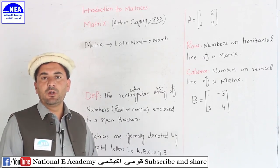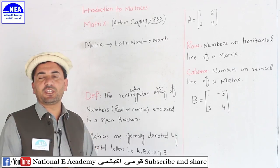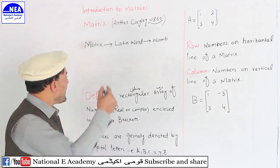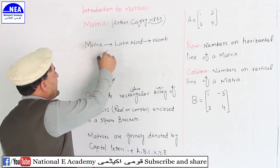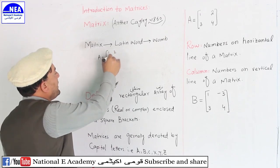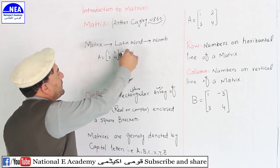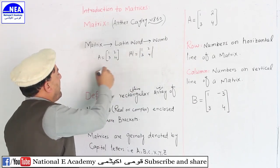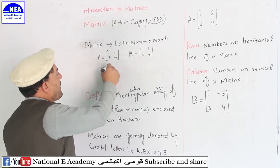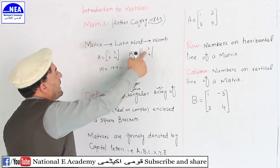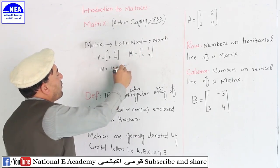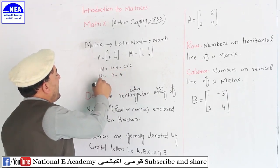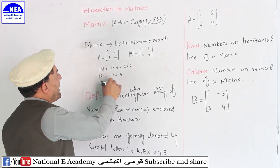When we apply this operation — the determinant — to a matrix of different numbers, a single number is produced. For example, take matrix A = [1, 2; 3, 4]. The determinant of A: we multiply the diagonal elements: 1×4 minus 2×3, which gives 4 minus 6, so the determinant of A equals minus 2.